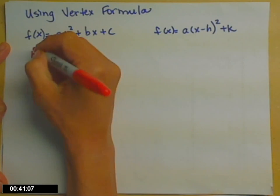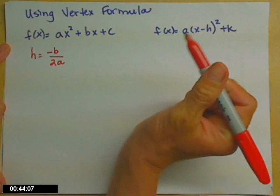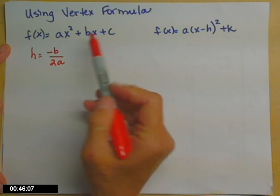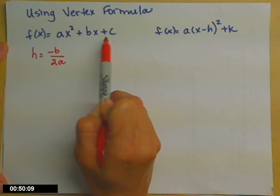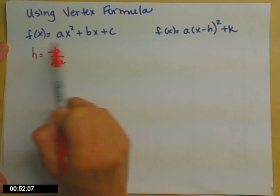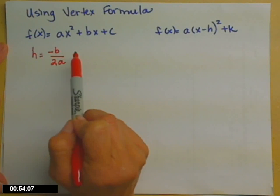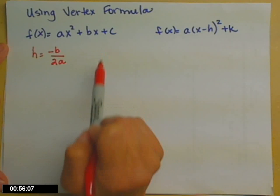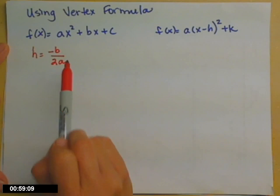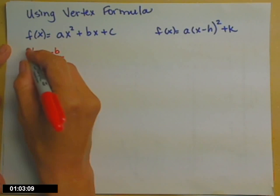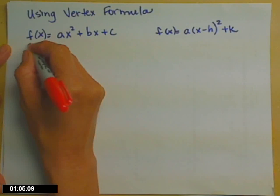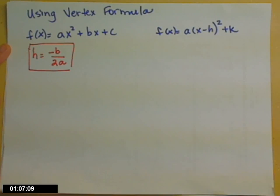Now, if you're in a higher class, something pre-calculus-ish, I would expect that you could complete the square on the general form. Divide everybody by a, take half the x coefficient, square it, add it, subtract it, factor, and figure out this relationship in that way. For now, we're just going to memorize. h is equal to negative b over 2a.